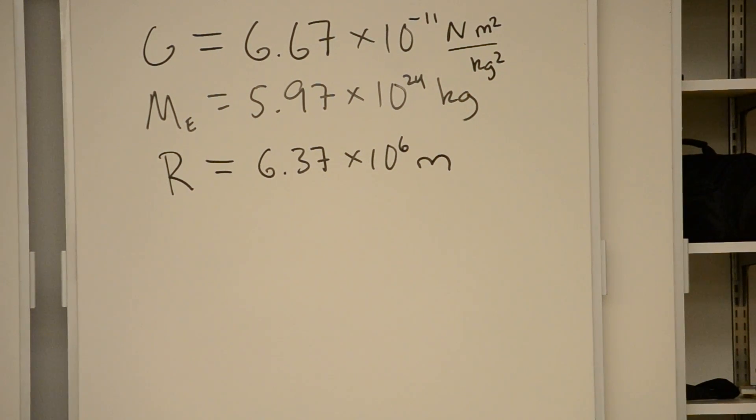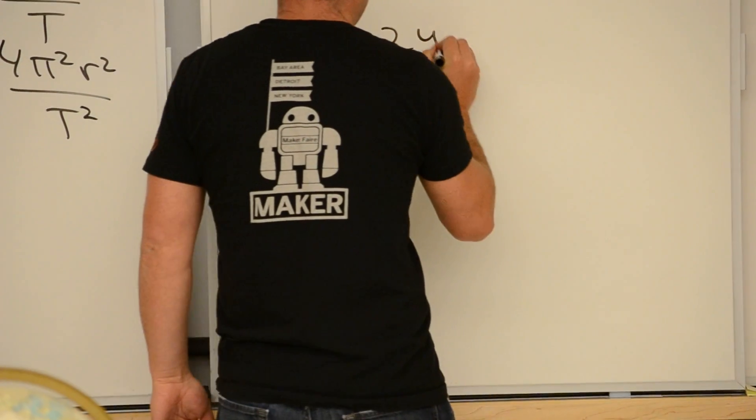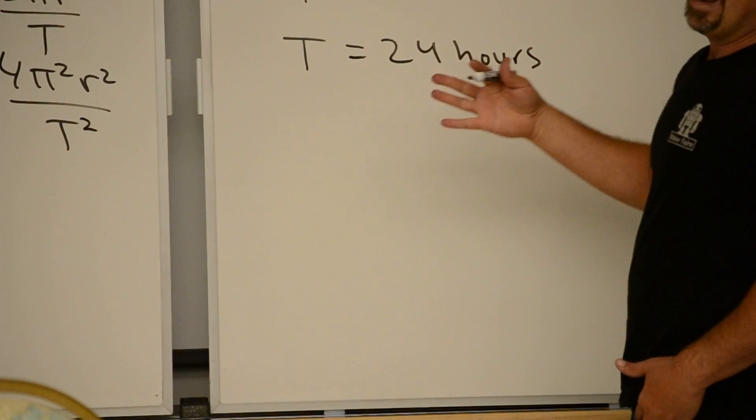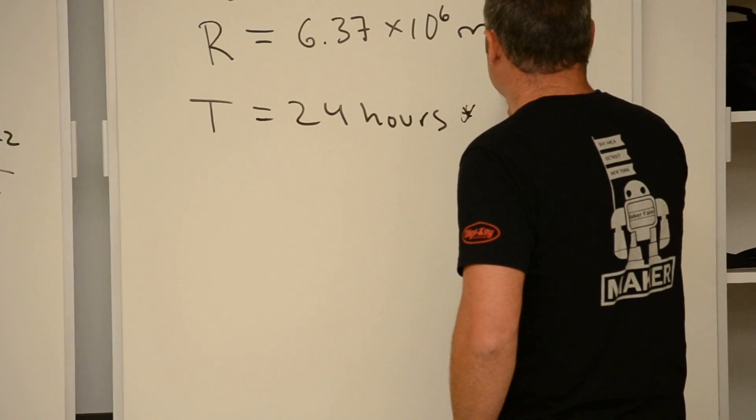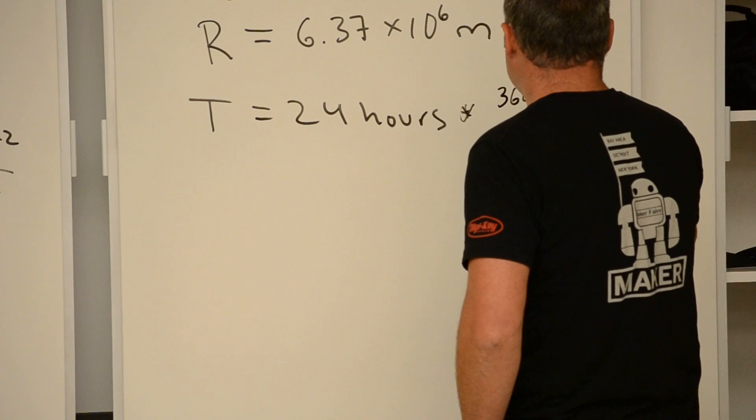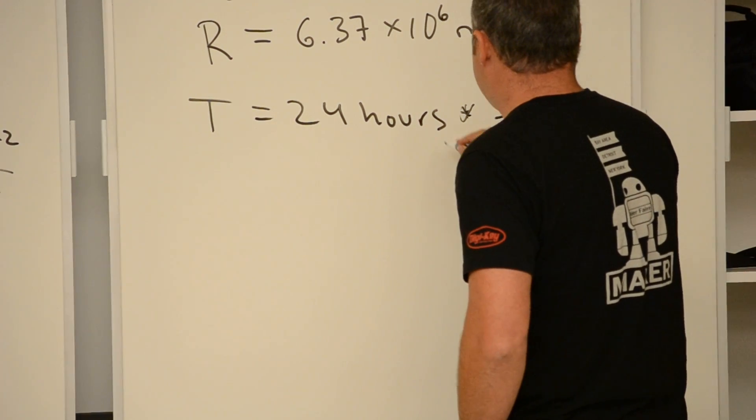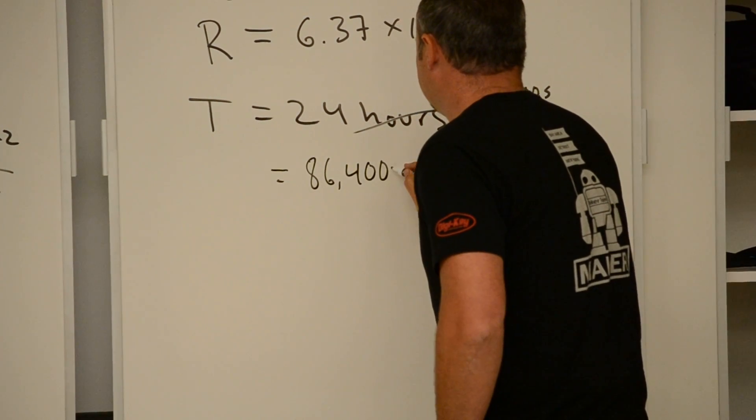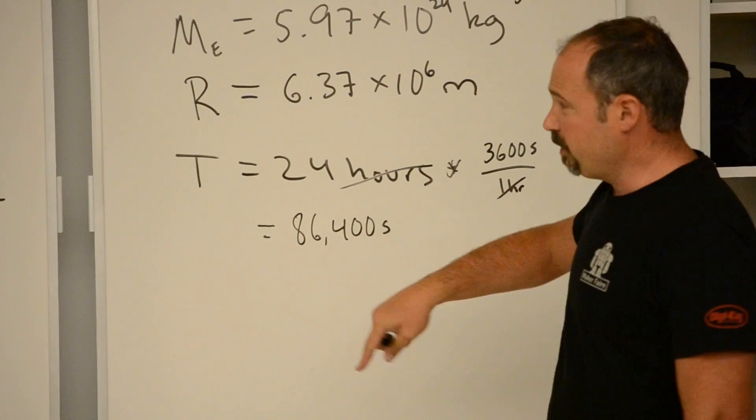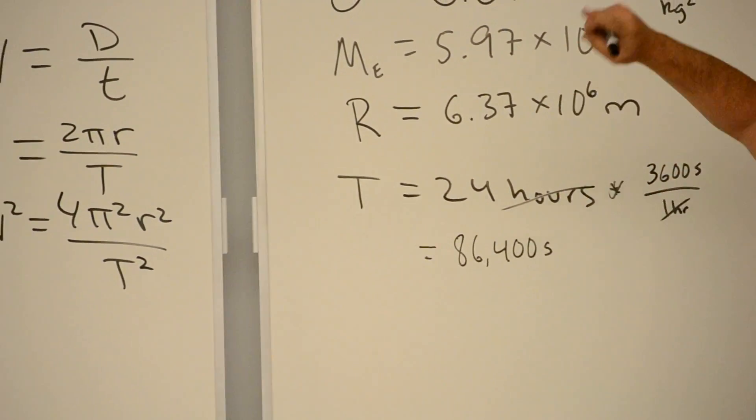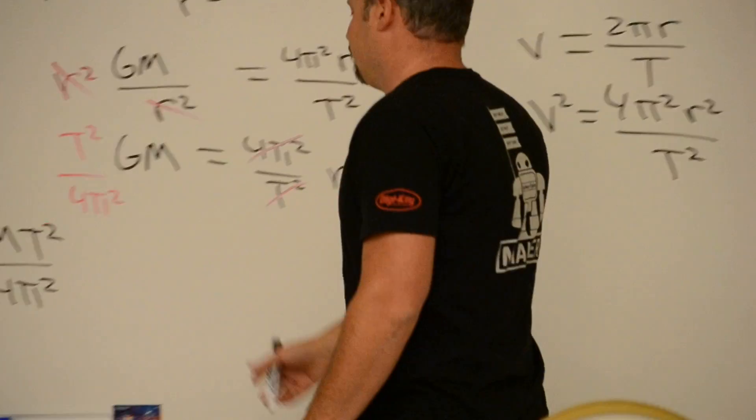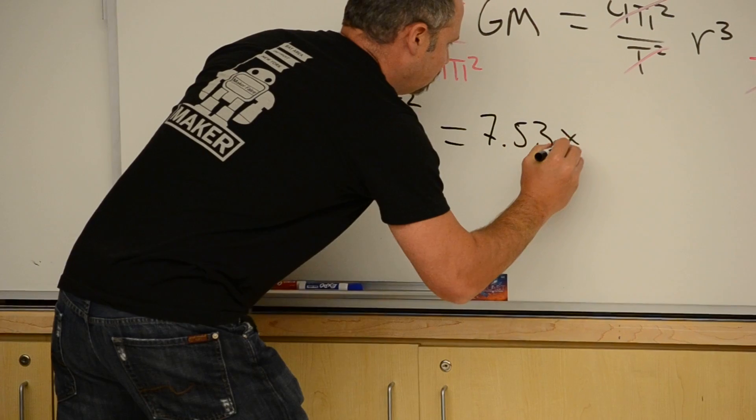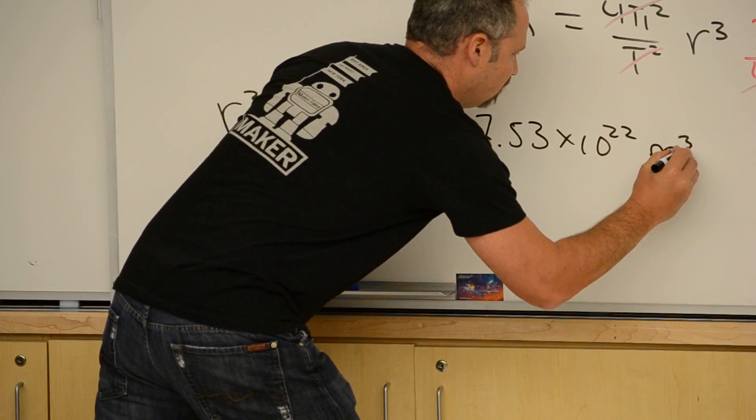Well, if I take these two values and plug in here, and then I also take the period of the Earth, which is, well, I'll write that over here. The period of the Earth is 24 hours. And 24 hours, if you convert into seconds, we can do that. There's 3600 seconds in one hour, so the hours cancel. And I get 86,400 seconds. So plug this in for period, plug in the mass of the Earth, plug in the universal constant of gravity, multiply it out, and you get 7.53 times 10 to the 22nd meter cubed.